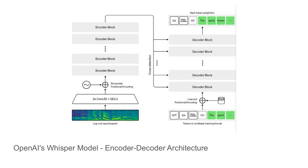The decoder part of this model looks just like a standard language model. Instead of being conditioned on some text to translate or an image to caption, it's just going to be using this speech signal directly. Each of these output token predictions will be made step by step, and generally we'll just use greedy decoding to output each of the next tokens.